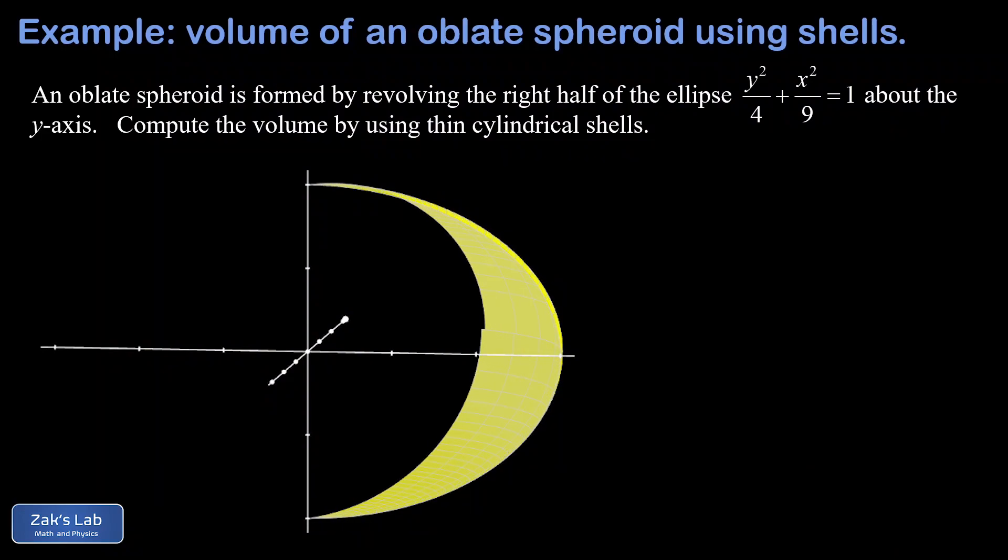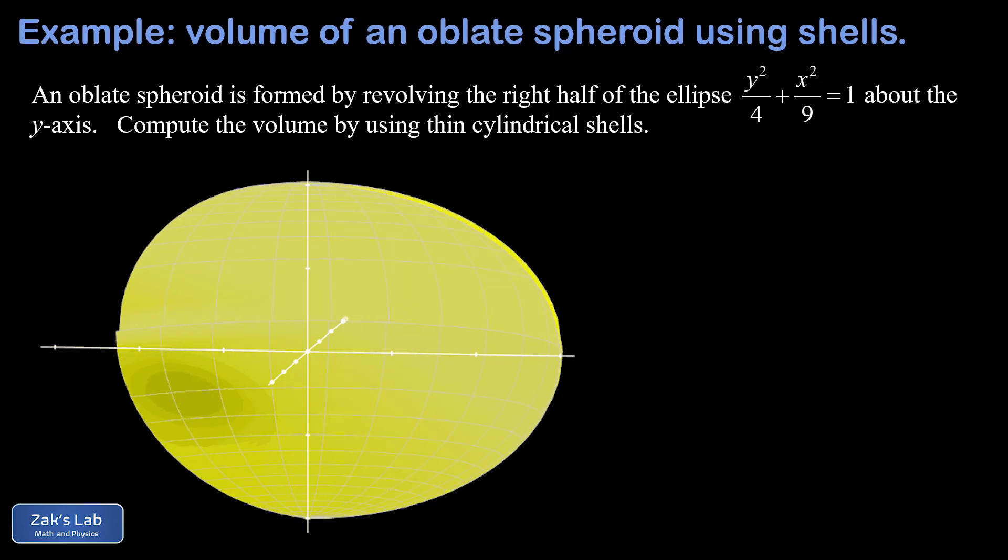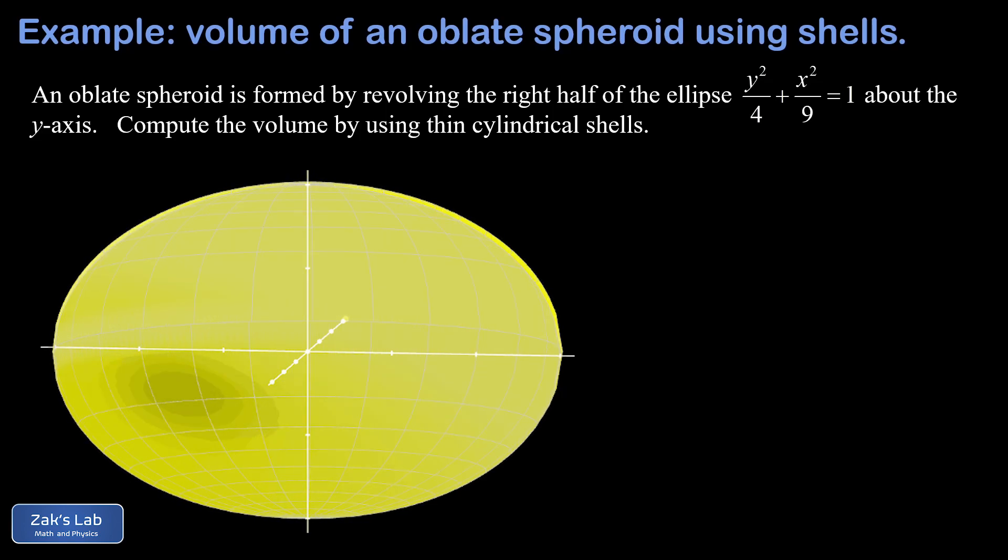In this video we're going to compute the volume of an oblate spheroid by revolving the right half of the ellipse y squared over 4 plus x squared over 9 equals 1 about the y-axis and then breaking the volume into cylindrical shells.